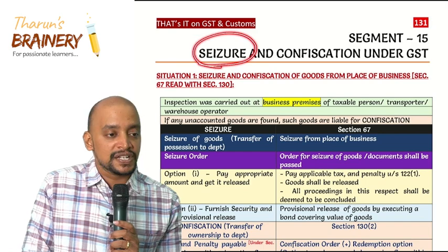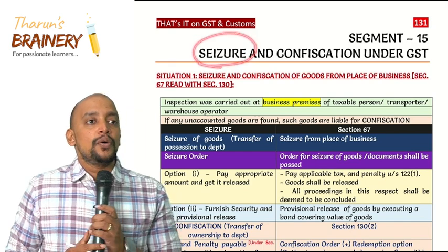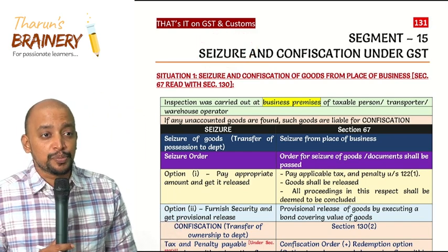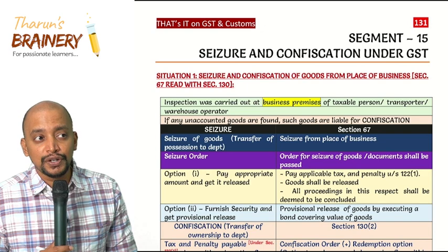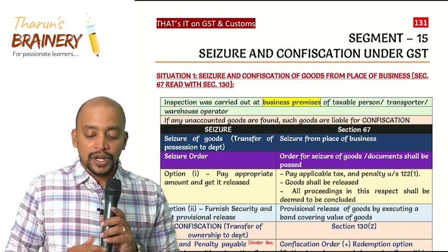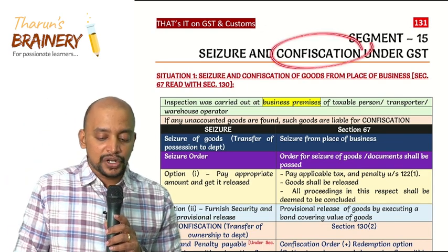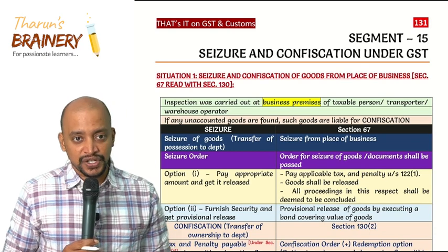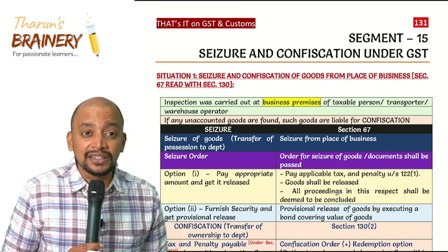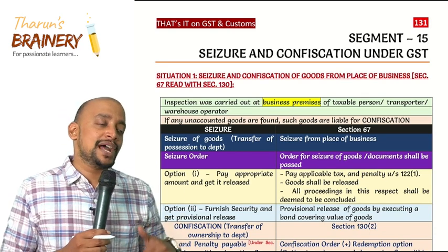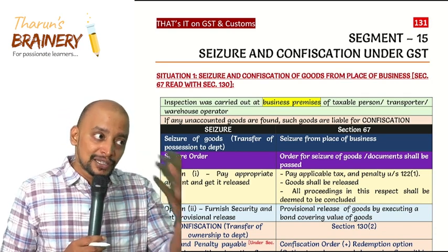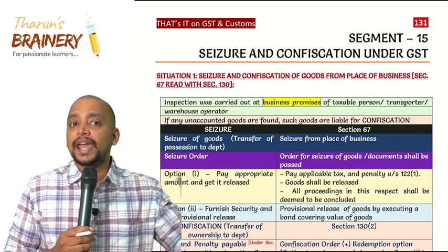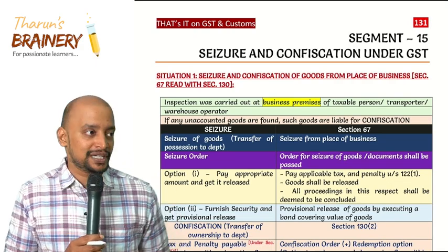Whenever a seizure order is passed, ownership is still with the taxpayer but possession of goods will go to the department. When a confiscation order is passed, the ownership as well as possession will be with the department, and the department will sell those goods, realize the proceeds, and will not pay any amount to the taxpayer.